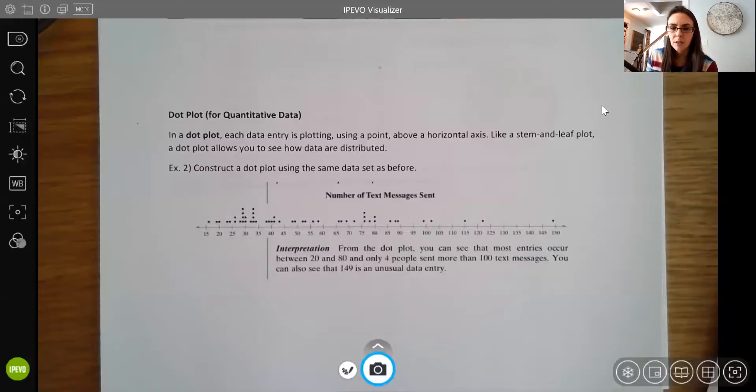It's another type of graph. Also, again, pretty quick. I shouldn't say they're super quick, but not too involved. You can do them pretty quick by hand. The dot plot, which is also used for quantitative data.